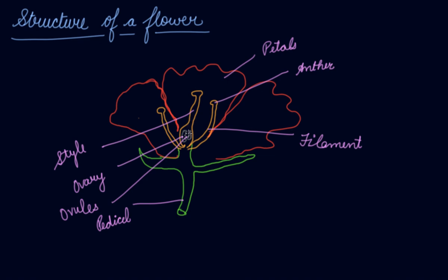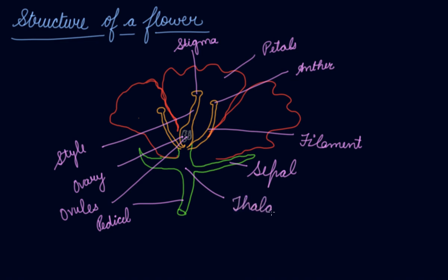On the style there is again a big kind of structure that is known as the stigma. Inside the flower you might see green colored little leaves. This middle part is known as the thalamus.